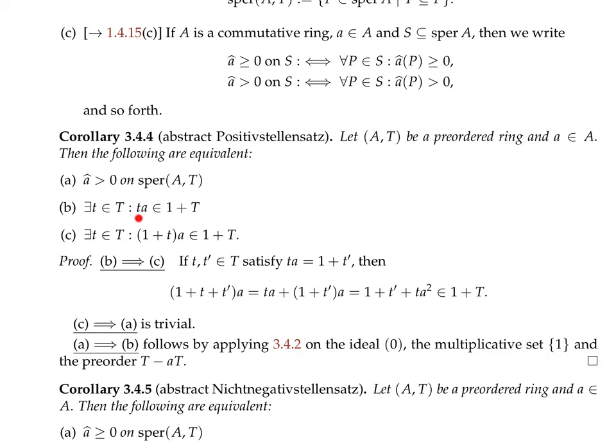You have already seen situations where we have theorems without denominators — for example, if you have a real polynomial in one variable which is non-negative on the real line, then it is just a sum of squares of polynomials; you don't need rational functions. But we had already seen the Motzkin polynomial, a non-negative real polynomial in two variables which was globally non-negative but not a sum of squares of polynomials, even though it was, by Hilbert's solution to the 17th problem, a sum of squares of rational functions. So in general, these denominators might play a big role.